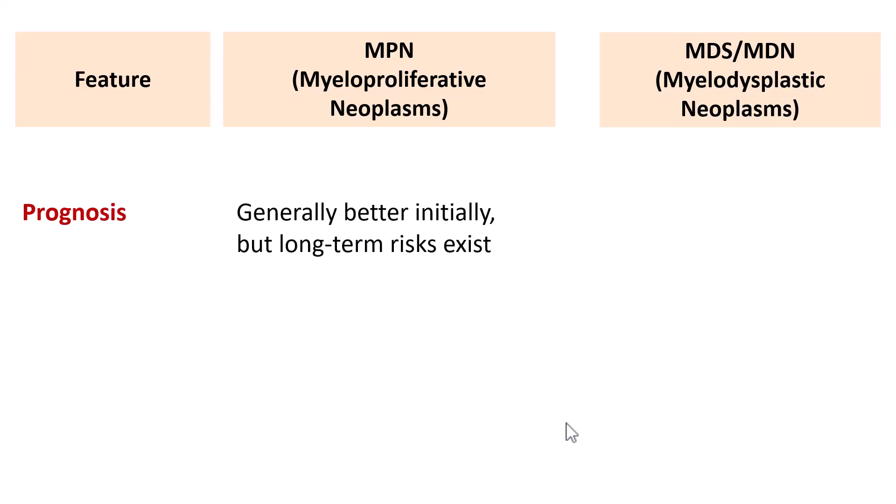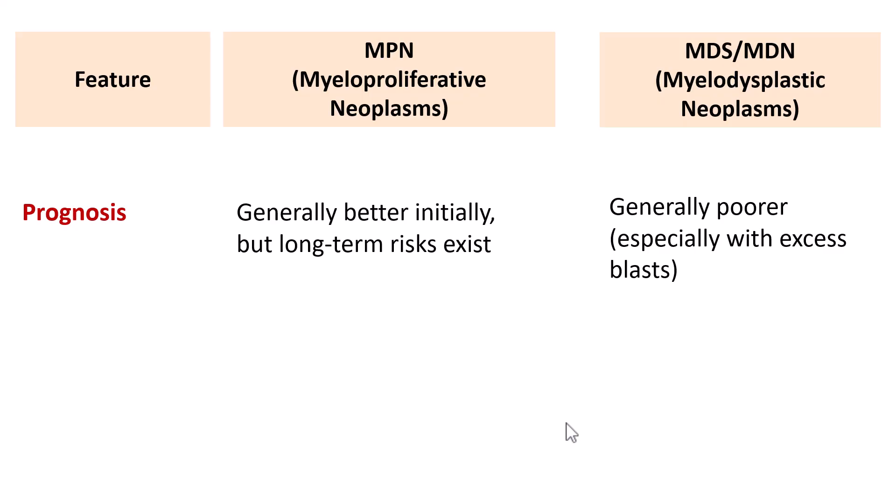Regarding prognosis, Myeloproliferative Neoplasms are generally better in terms of prognosis, though long-term risks exist — some patients progress to myelofibrosis or acute myeloid leukemia. Whereas Myelodysplastic Neoplasms carry a generally poor prognosis, especially MDS with excess blasts, because the risk of transformation into acute myeloid leukemia is extremely high in those cases.